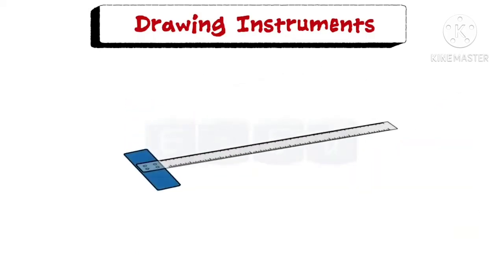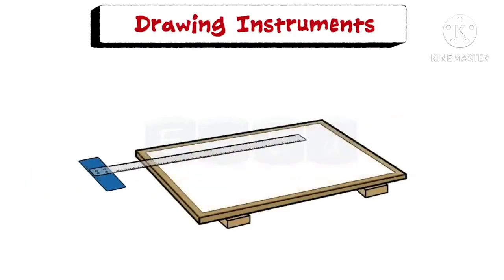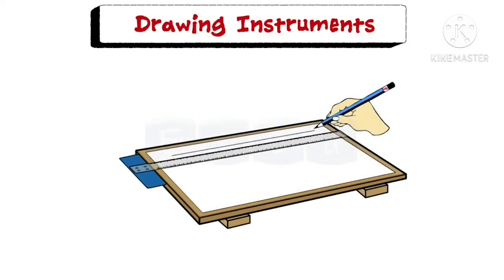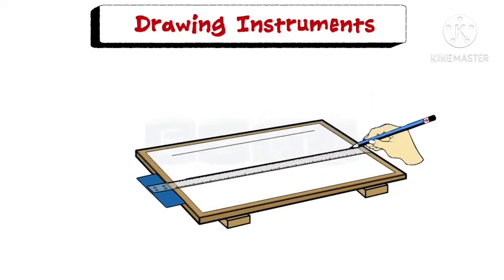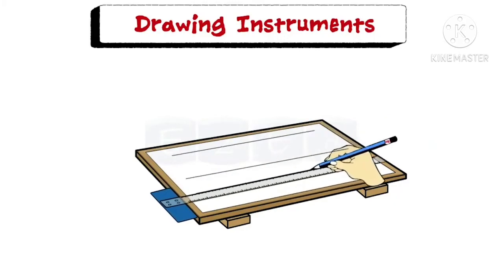Next is the T-square. It is made of two parts — the stock and the blade — which are joined together at right angles by means of screws and pins. T-square is fitted at the side of the drawing board, slides along the edge of the board, and is used to draw horizontal straight lines.